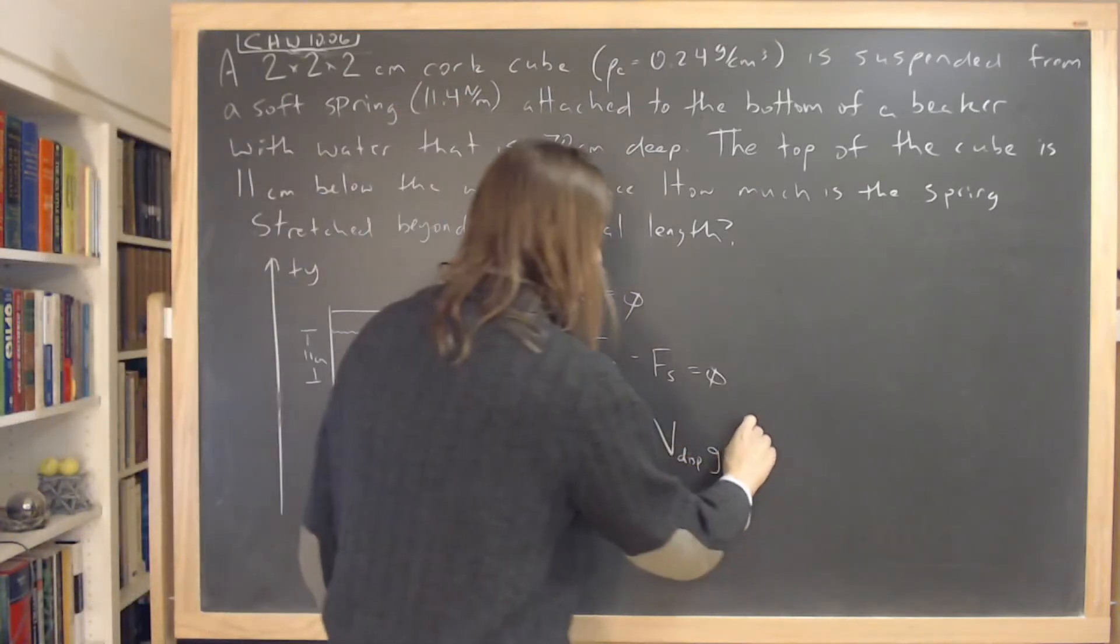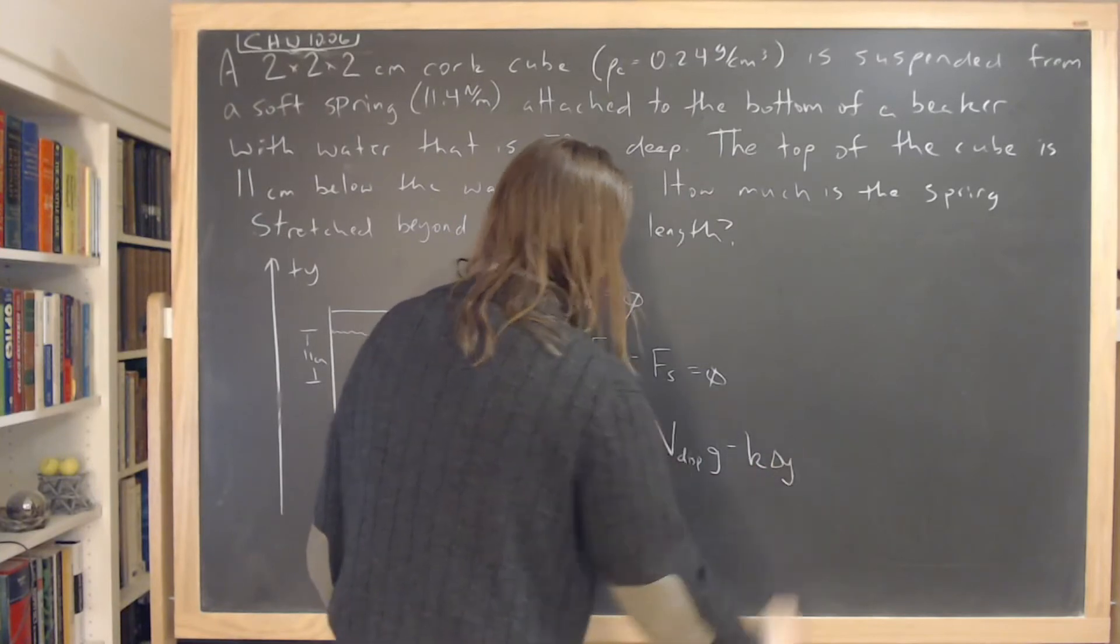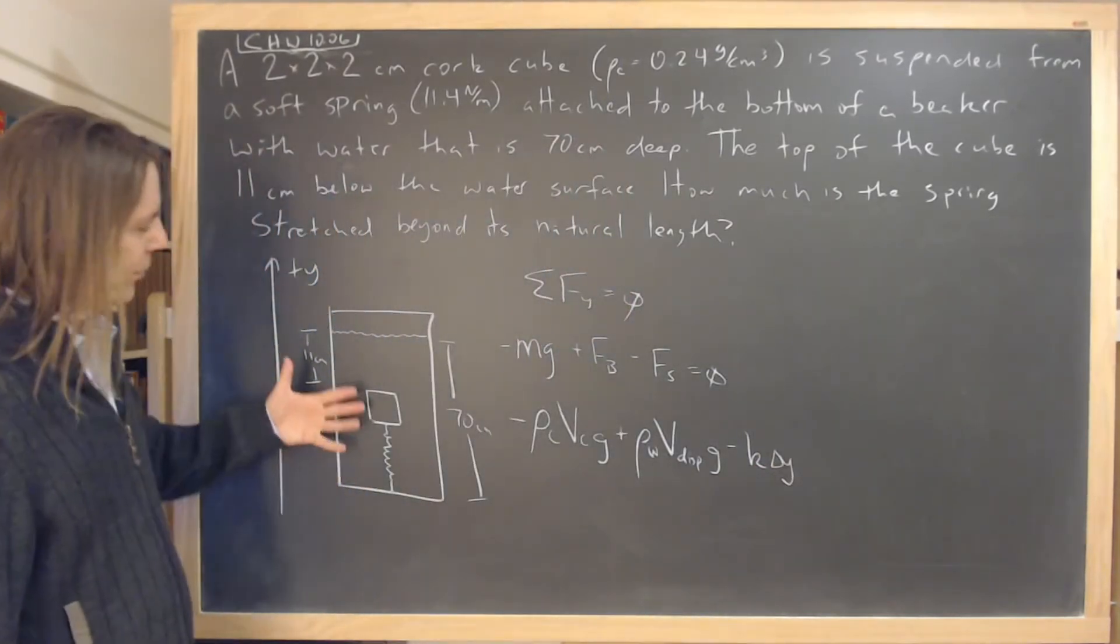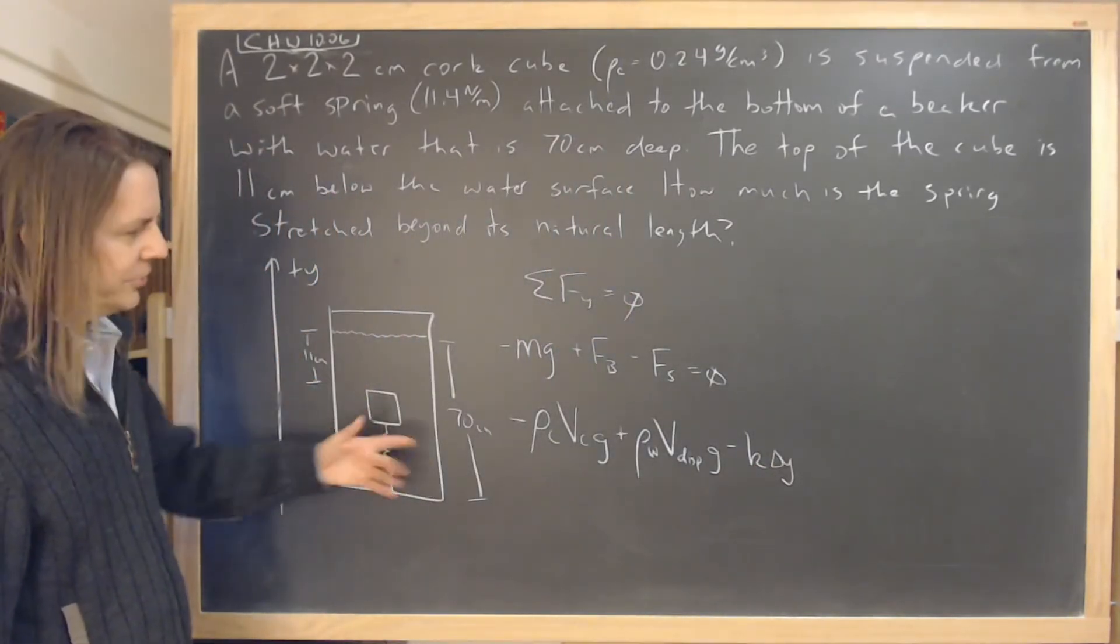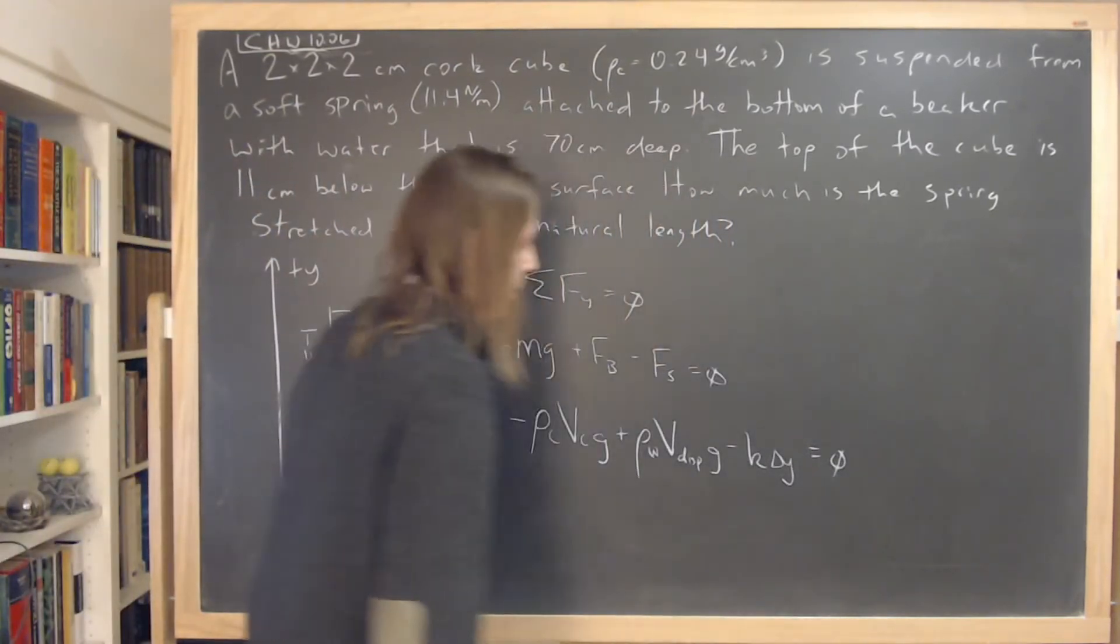And then let's see the spring force is just k times the displacement. So we have k and then times the delta y. We'll say that doesn't really refer to the position of the cork. It refers to the displacement of the spring. We'll just call it delta y. So those have to be zero.